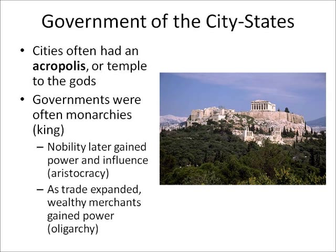Governments were often monarchies at first — that's where the king is in charge. But over time, the nobility, the wealthy landowners, strong-armed the king into giving them some power, and you begin to have an aristocracy develop. An aristocracy is your elites, your nobles, the wealthier and well-connected people. Even today, people who are rich and have friends in high places are referred to as aristocrats.